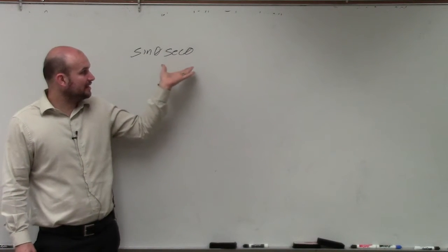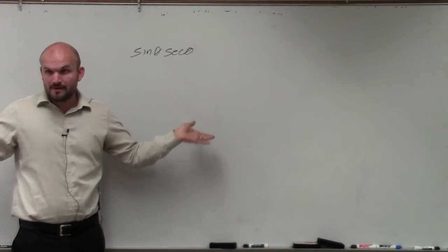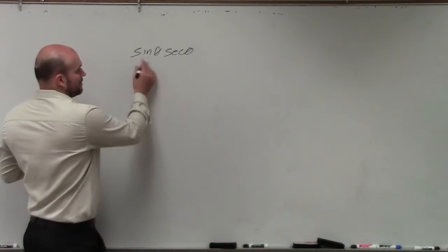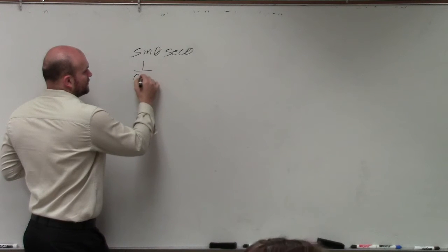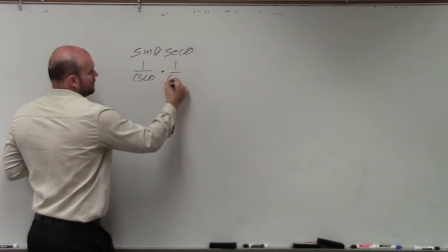But when I look up here, I see that I have a sine and I have a secant. Well, I could use my reciprocal identities. So the most common thing that students do is say, well, I can do sine as one over cosecant of theta, and I can do secant as one over cosine of theta.